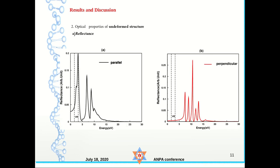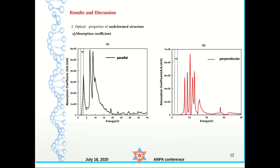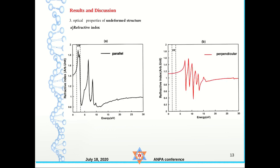The reflection spectra in the perpendicular direction is shifted toward higher energy — a blue shift. Beyond 20 eV incidence, the material is totally transparent. The absorption spectra arise from interaction of the incident electromagnetic wave with electrons and holes of the system. The refractive index for parallel incidence is much higher than for perpendicular incidence.